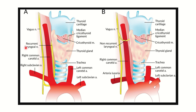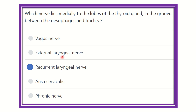Our answer is confirmed: the recurrent laryngeal nerve is located between the esophagus and the trachea. The other options — vagus nerve, external laryngeal nerve, ansa cervicalis, and phrenic nerve — are not located at this place. Thank you.